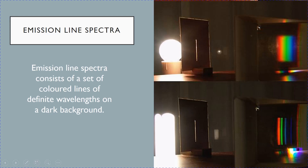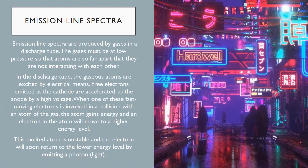So let's look at what happens in this type of special lamp. These special lamps are called discharge lamps or discharge tubes. Inside the discharge tube, there is gas at low pressure. This is because at low pressure, we can analyze the energy levels of individual atoms.